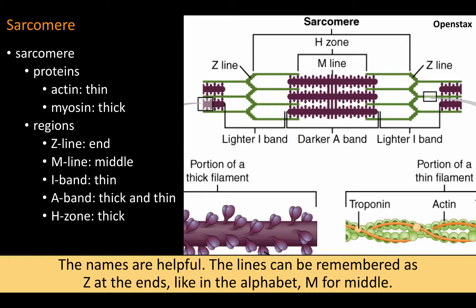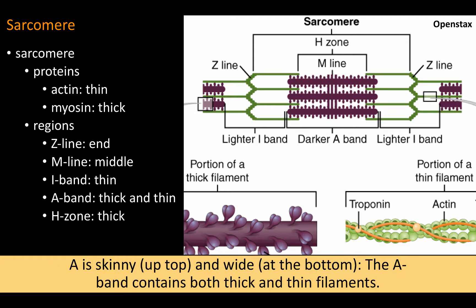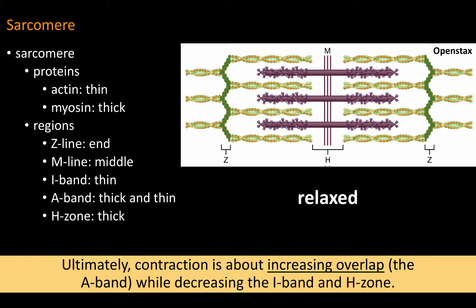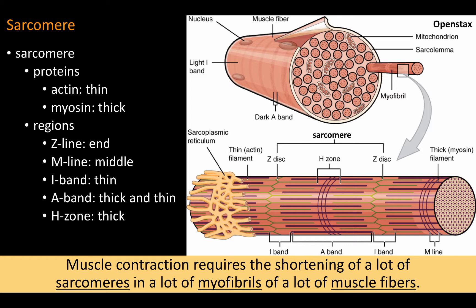The names are helpful. The lines can be remembered as Z at the ends, like in the alphabet; M for middle. I is a skinny letter — the I band has only thin filaments. H is a wider letter — the H band has only thick filaments. A is skinny up top and wide at the bottom; the A band contains both thick and thin filaments. Ultimately, contraction is about increasing overlap — the A band — while decreasing the I band and H zone. Muscle contraction requires the shortening of a lot of sarcomeres in a lot of myofibrils of a lot of muscle fibers.